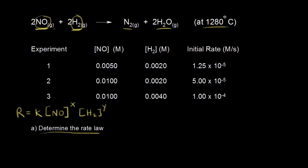We can figure out X and Y by looking at the experimental data. To find X, we need to know how the concentration of nitric oxide affects the rate. We'll look at experiments one and two, because the concentration of hydrogen is constant at 0.002 molar in both. The concentration of nitric oxide goes from 0.005 to 0.010 — we increased it by a factor of two.